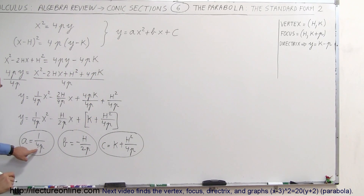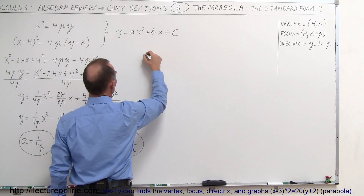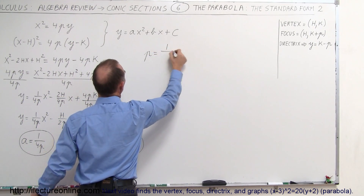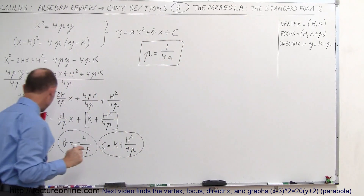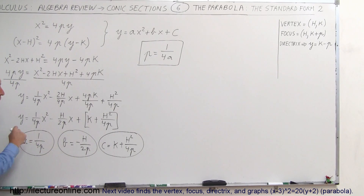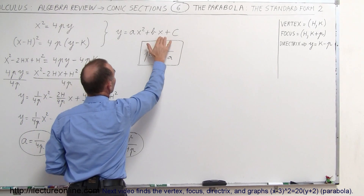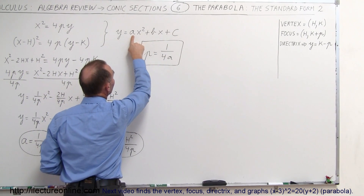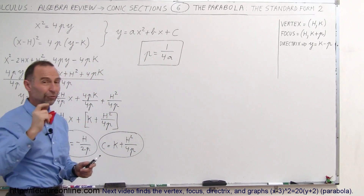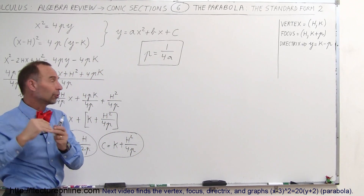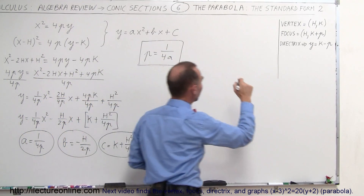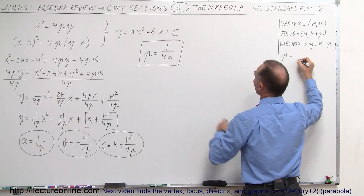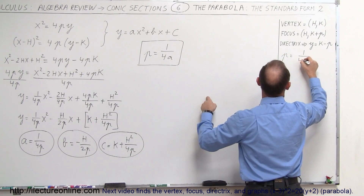We're going to solve each of these for p, h, and k so we can go back and forth between the standard form of the parabola and the quadratic equation. Since p and a can be interchanged, p is equal to 1 over 4a. So if I have a quadratic equation in this form and I know what a is, I can find p, which is the distance from the vertex to the focus or from the vertex to the directrix, simply as 1 divided by 4a.